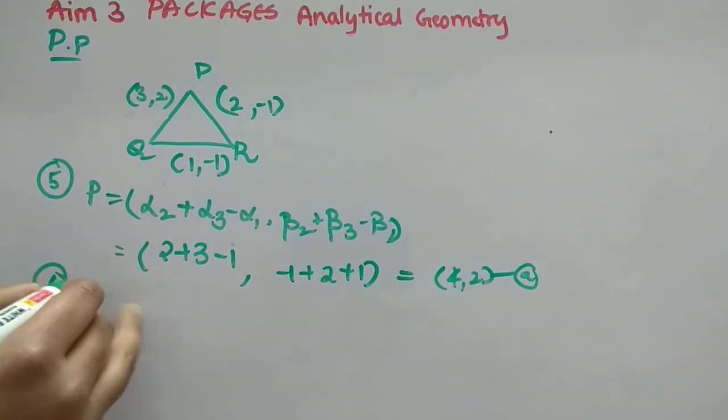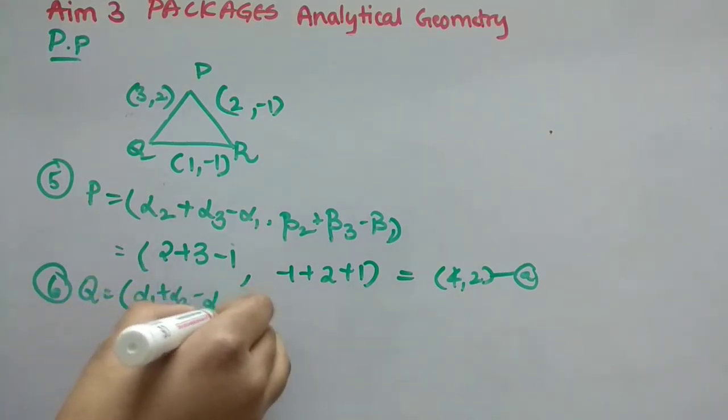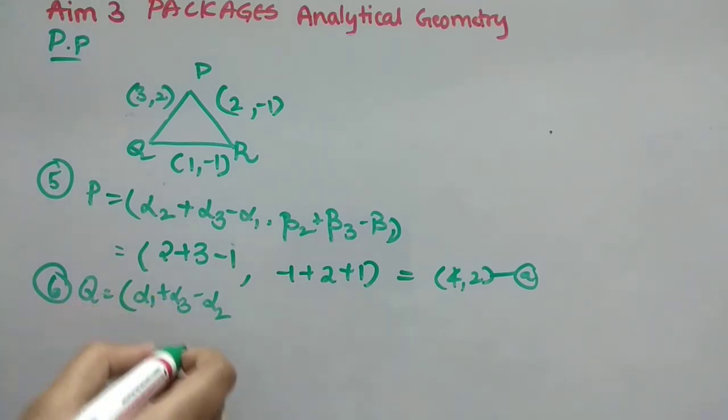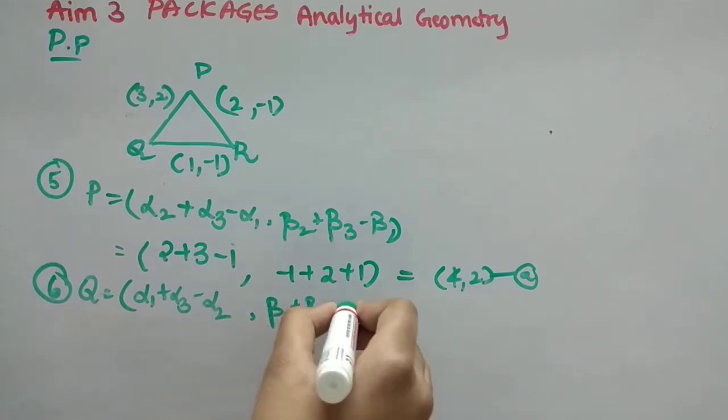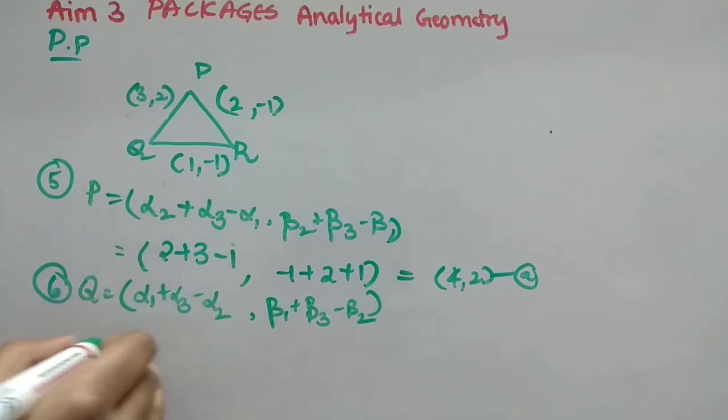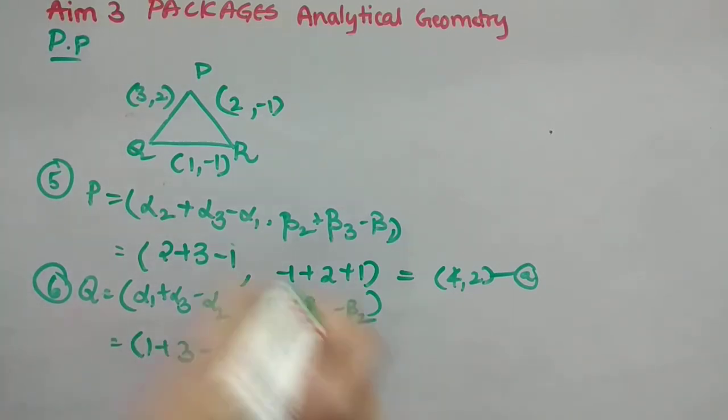Now, sixth question also, I will explain with this diagram itself. Because then only it will make it easy, right? So, that's fine. Formulae. First is alpha 1 plus alpha 3 minus alpha 2 comma beta 1 plus beta 3 minus beta 2. Clear? Now, what is alpha 1? Alpha 1 is 1 itself plus alpha 3 is 3 and alpha 2 is 2 comma.